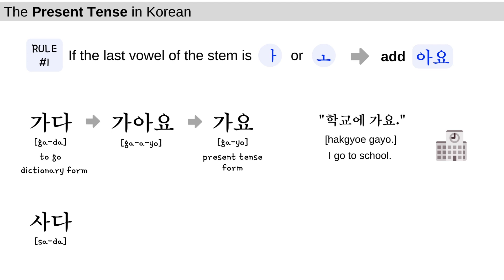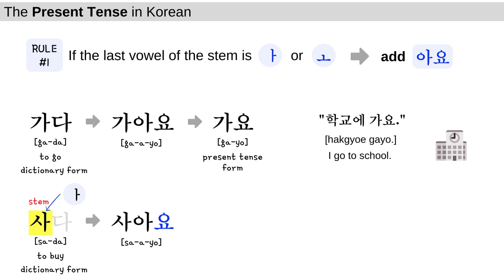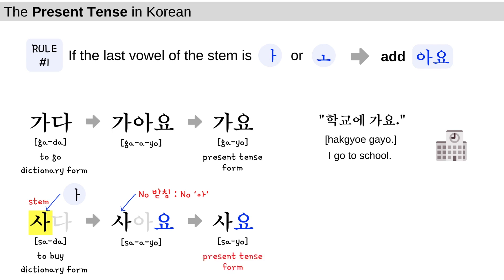사다 is a verb which means to buy or to get, and 사다 is the dictionary form. Let's change 사다 to the present tense form. First, you delete 다. Now you have 사, which is the stem. The vowel of 사 is 아, so according to the rule, you put 아요 at the end — that gives 사아요. But the stem 사 has no 받침, so you don't need 아 here either. It becomes 사요. 사요 is the present tense form of 사다.